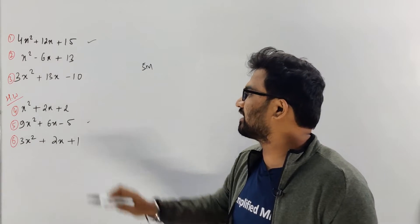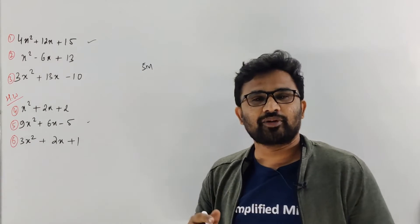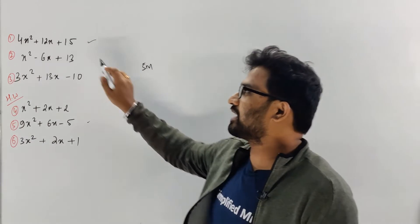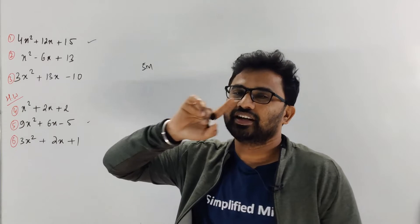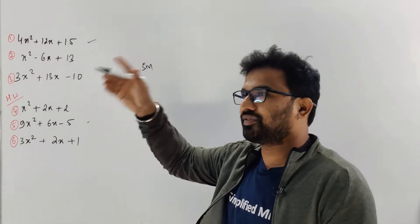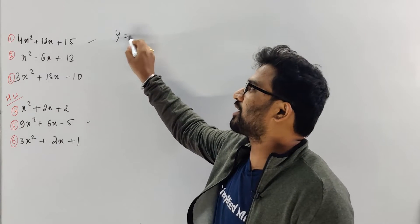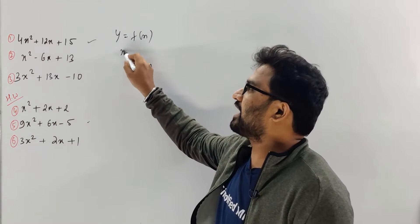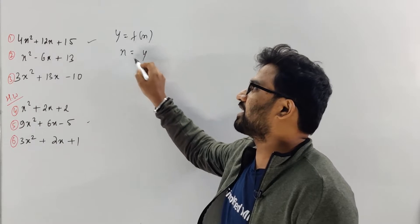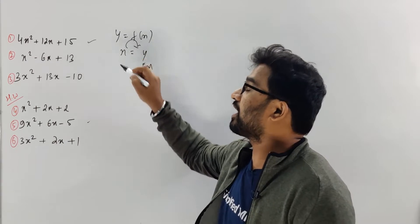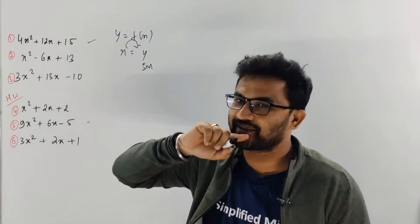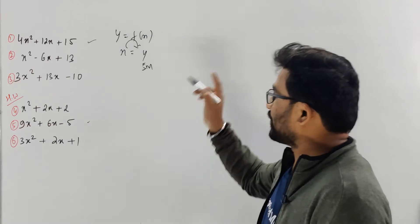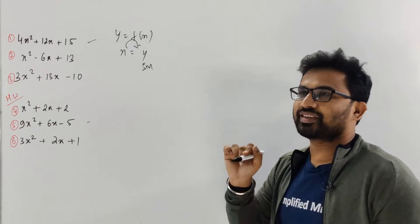These two questions — you can see it's there in the 5-marker. Basically, you have to convert a given function in terms of, like, y is equal to f of x. So, you have to convert x in terms of y. This method is very important, and you need to know it for the 5-mark question.